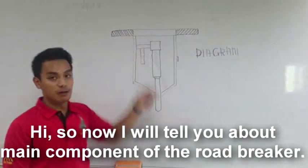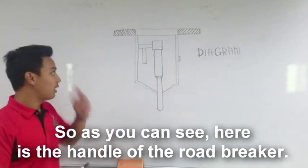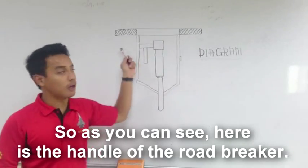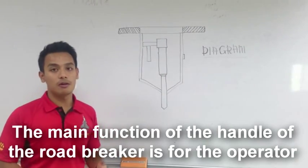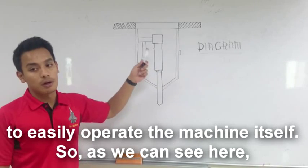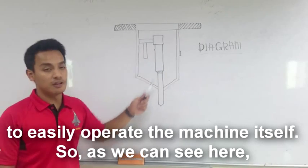Now I will tell you about the main components of the road breaker. As you can see here, this is the handle of the road breaker. The main function of the handle of the road breaker is for the operator to easily operate the machine itself.